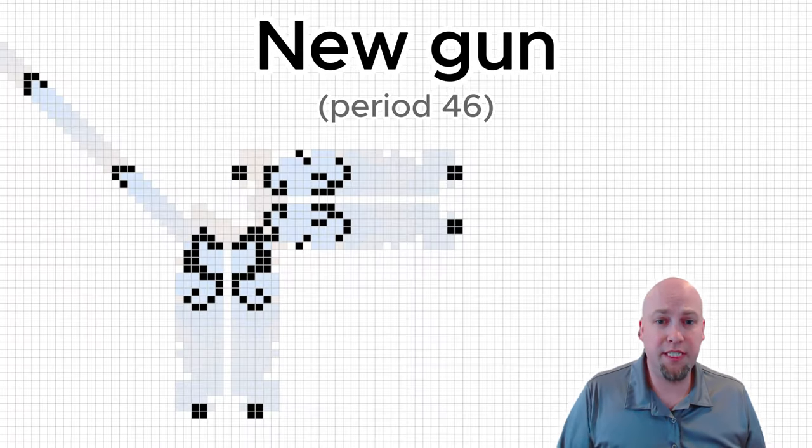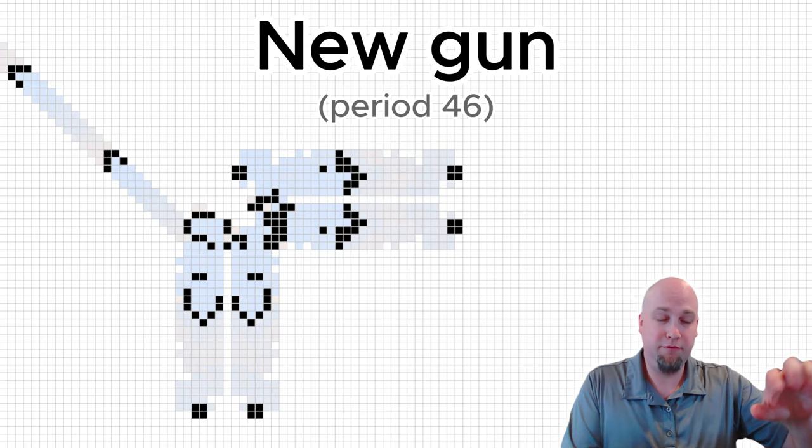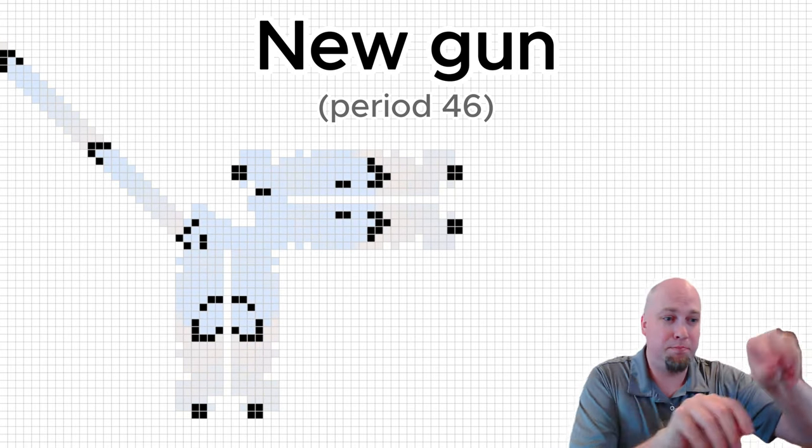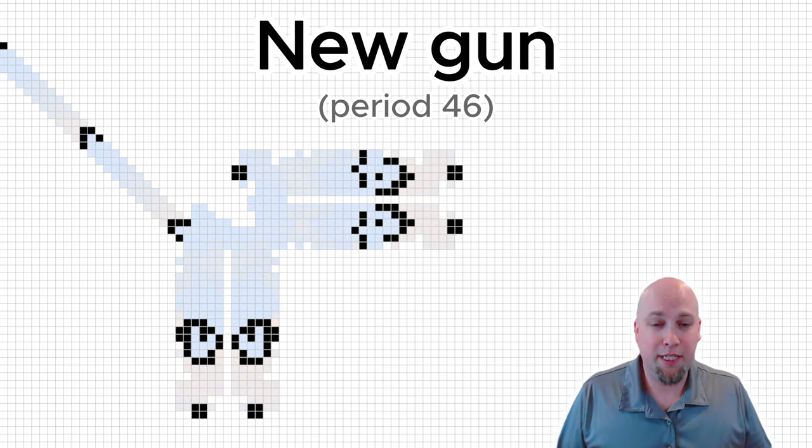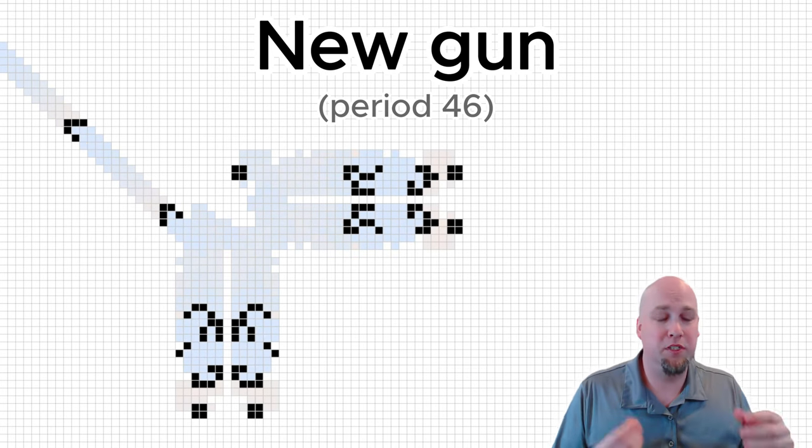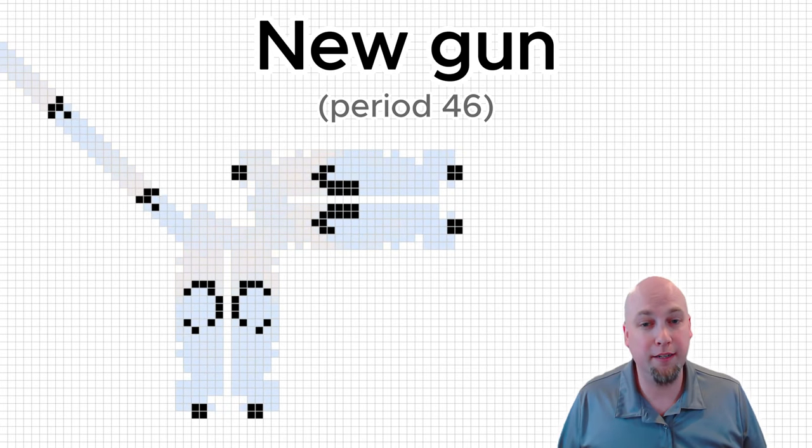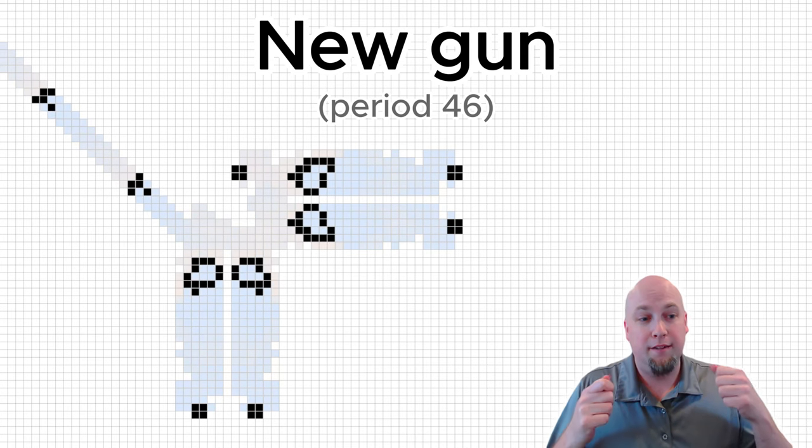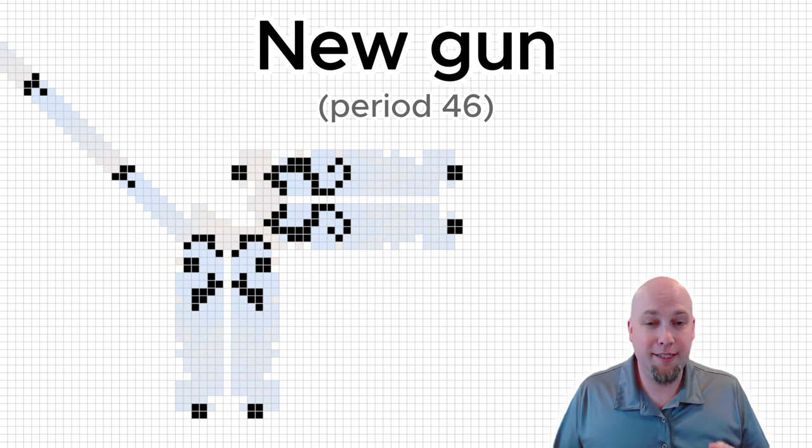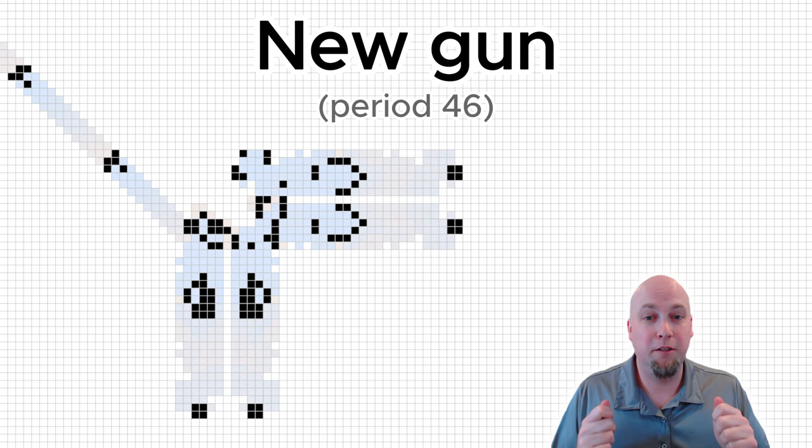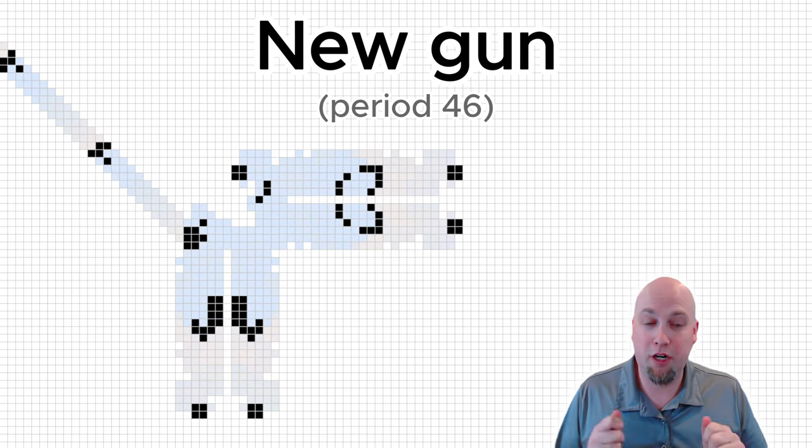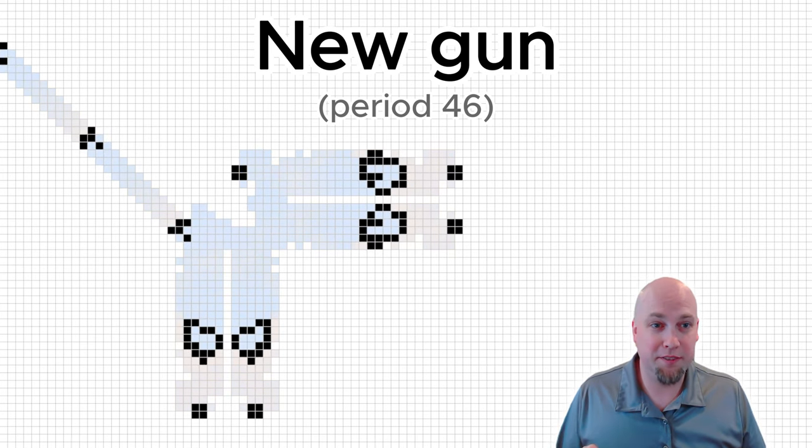Similarly with the period 46 new gun. The things, they're called twin bees, they bounce back and forth at period 46, and the glider stream was also period 46. So, that's a true period 46 glider gun. And the question was, can we construct true-period guns for every single period? And this has been much, much harder, and that's where these new results come in.